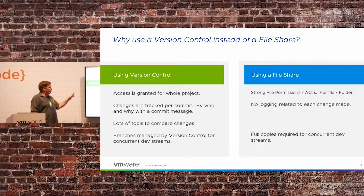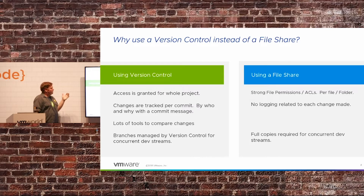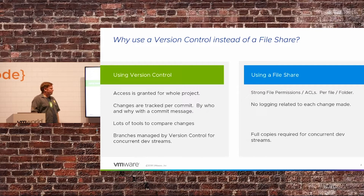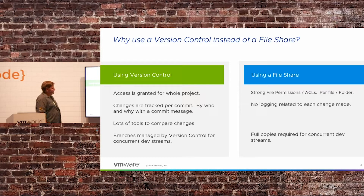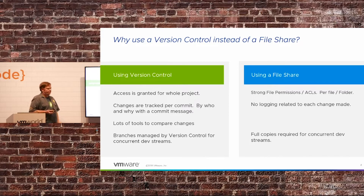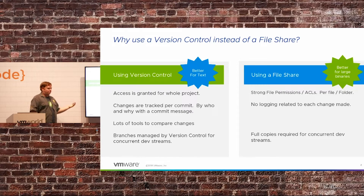Why would you use version control instead of a file share? With version control, access is granted per project. With a file share you could add more specific ACLs per file or folder, but version control is by project. With version control you can track changes per commit — describing what changed, by who, and when. There are lots of tools available to compare changes over time and visualize branches and commits. With a file share you tend to have full copies of things in separate folders, which is hard to track. Generally, file shares are great for binaries but not for text, so use your version control for anything text.